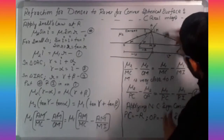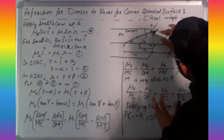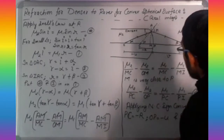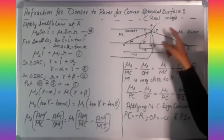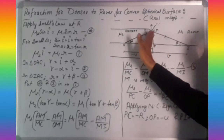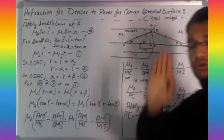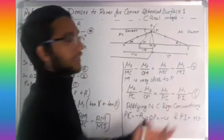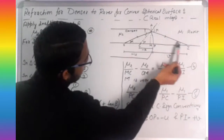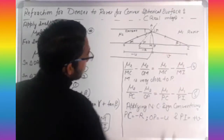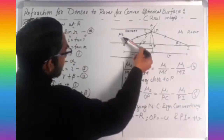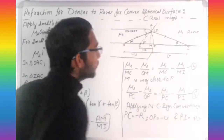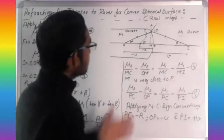If the ray is going towards the normal, then since we are moving from denser to rarer, the ray bends away. The angle of incidence is beta, and the surface has refractive index mu2 on one side and refractive index mu1 on the other side. We also need to consider sign conventions here.